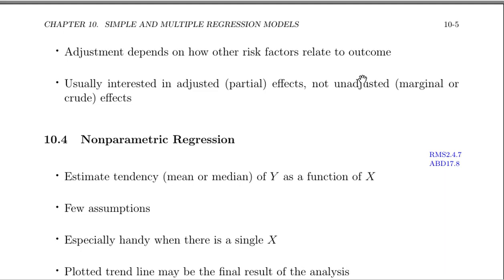Sounds a little out of place, but it's a good thing to remember that linear regression is a special case of a much more general set of methodologies and makes quite restrictive assumptions about shapes of relationships. And so in Section 2.4.7 of the Regression Modeling Strategies book as well as Section 17.8 of the Analysis of Biological Data book, there's a discussion of this section. So we may be interested in estimating the tendency of a response variable Y as a function of a continuous variable X and nonparametric regression allows us to do that with very few assumptions. This is an especially handy method to have in your toolbox when there's only a single predictor of interest. And in that case, your final result might be the plotted trend line that comes from the nonparametric method.